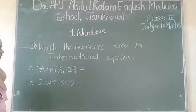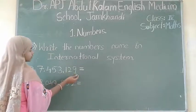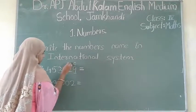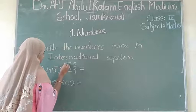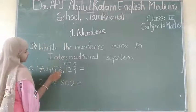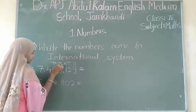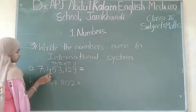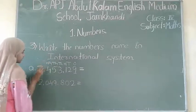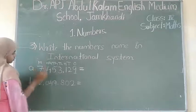7,453,129. So students, simply write here: 9 comes in the ones column, 2 is in the tens column, 1 is in the hundreds. Next, 3 is in thousands, 5 is in ten-thousands, 4 is in hundred-thousands, and the last digit 7 is in the millions place.